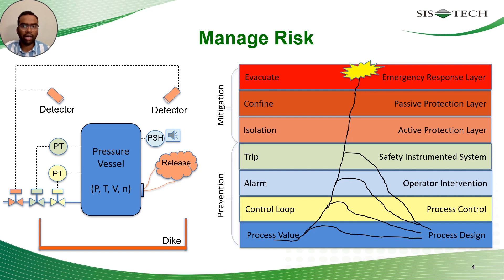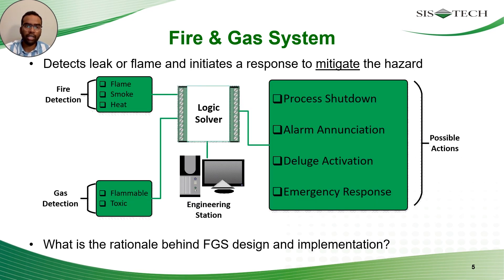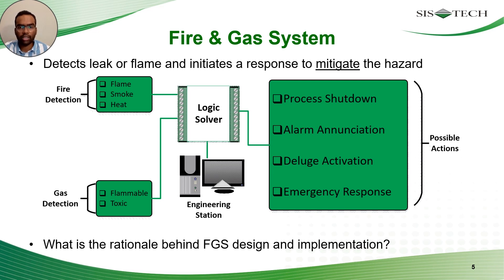Detection and action of this system is a complex problem statement to solve, and we will look into those aspects. FGS basically detects a leak or flame and initiates a response to mitigate the hazard. It provides continuous monitoring of abnormal situations like flammable or toxic gas releases within the facility. The system is designed to provide early warning after loss of primary containment to avoid further escalation. The detection hardware might be highly reliable, but there is still a likelihood that it may never detect the gas release or fire — so relying solely on hardware doesn't guarantee the effectiveness of an FGS.